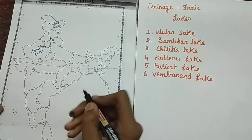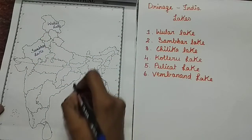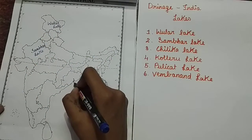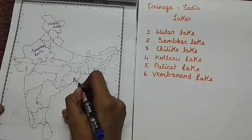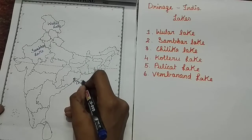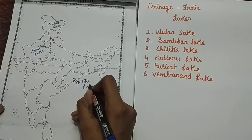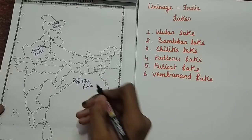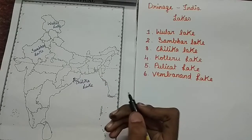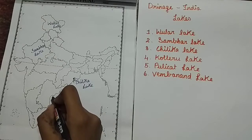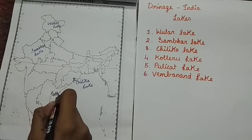Then Chilika Lake — Chilika Lake is located here. Then Koleru Lake — Koleru Lake is located here.